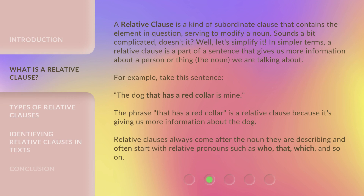A relative clause is a kind of subordinate clause that contains the element in question, serving to modify a noun. In simpler terms, a relative clause is a part of a sentence that gives us more information about a person or thing — the noun — we are talking about. For example, in the sentence 'The dog that has a red collar is mine,' the phrase 'that has a red collar' is a relative clause because it's giving us more information about the dog.